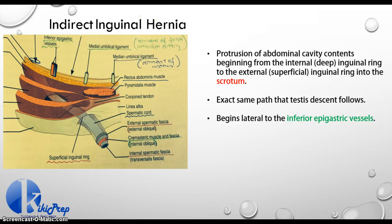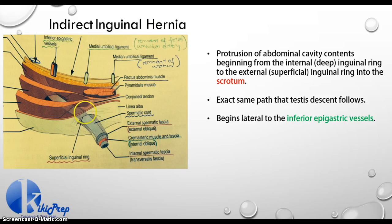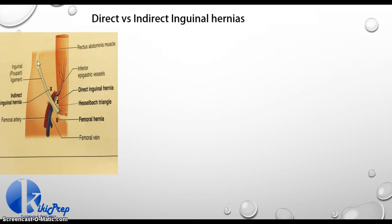Let's take a look at the indirect inguinal hernia. In the indirect inguinal hernia, what is happening is you have a protrusion of your abdominal cavity contents beginning from your internal or deep ring, right here. It goes through your spermatic cord, following the same direction as the descent of your testis, coming out of your superficial ring and ultimately ending up in your scrotum. This follows the exact same path that the descent of your testis follows. Going back to the inferior epigastric vessels, you can see that this happens lateral to our inferior epigastric vessels, which is why it is in very close proximity to the deep inguinal ring and can fall into that ring.